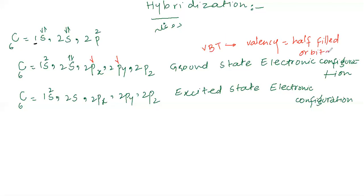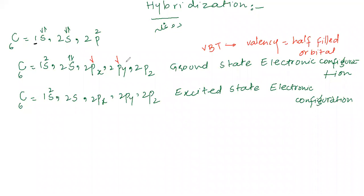According to this theory, carbon's valence is equal to its number of half-filled orbitals. Carbon has half-filled orbitals at 2Px and 2Py — one electron in each. So according to VBT, the valency of carbon should be 2. But in actual compounds, carbon's valency is 4, so VBT cannot explain this.